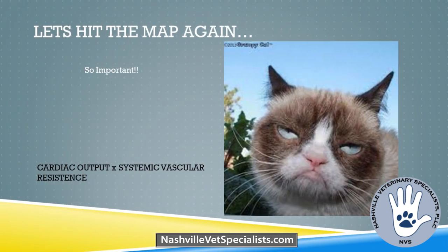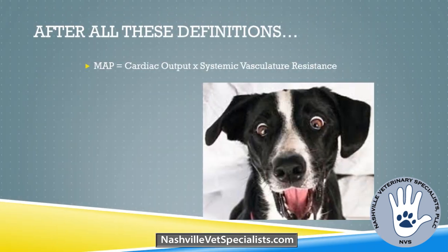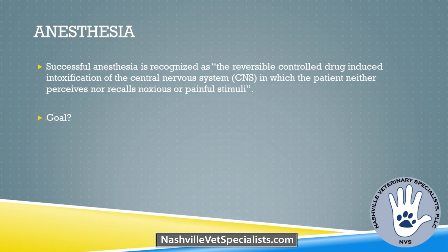Cardiac output times the systemic vascular resistance equals the MAP — that's the most important thing when using anesthetics of any type. Cardiac output is the output of blood from the heart per beat. Stroke volume is the blood pumped from the left ventricle per beat. Systemic vascular resistance is the resistance of blood flow offered by the systemic vasculature.